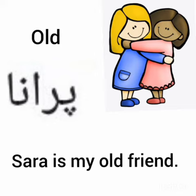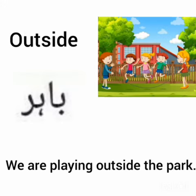Now we will use 'old' in a sentence. اب ہم old کو ایک جملے میں استعمال کریں گے۔ Sara is my old friend. Sara میری پرانی دوست ہے۔ Old means پرانا. The next word is 'outside'. Outside کا مطلب ہوتا ہے باہر — outside means باہر.